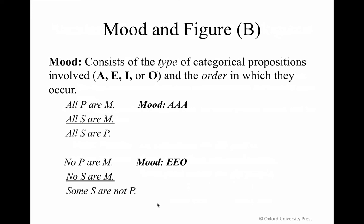In the argument 'All P are M,' 'All S are M,' 'All S are P,' you have three universal affirmatives, so the mood is AAA. The mood of the second example is EEO — the major premise is a universal negative, the minor premise is a universal negative, and the conclusion is a particular negative.